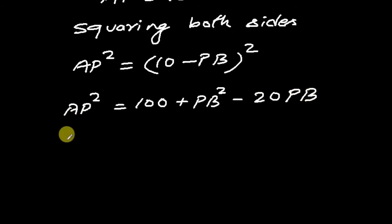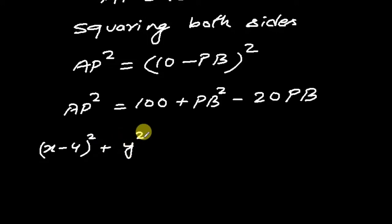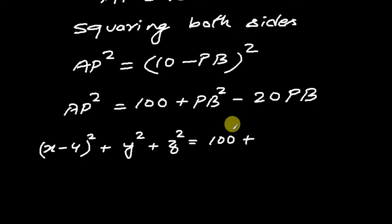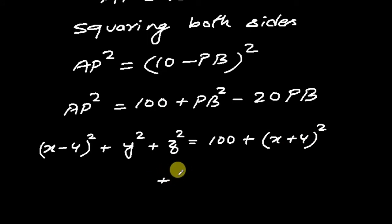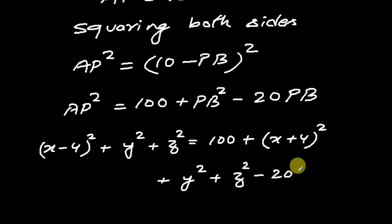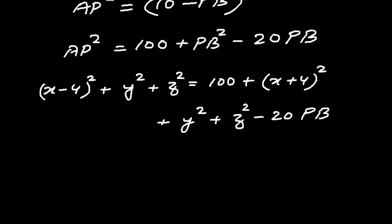Now for AP², we apply the distance formula. So we get (x - 4)² + y² + z² = 100 + (x + 4)² + y² - 20PB. Here we can see that y² and z² will cancel out from both sides.